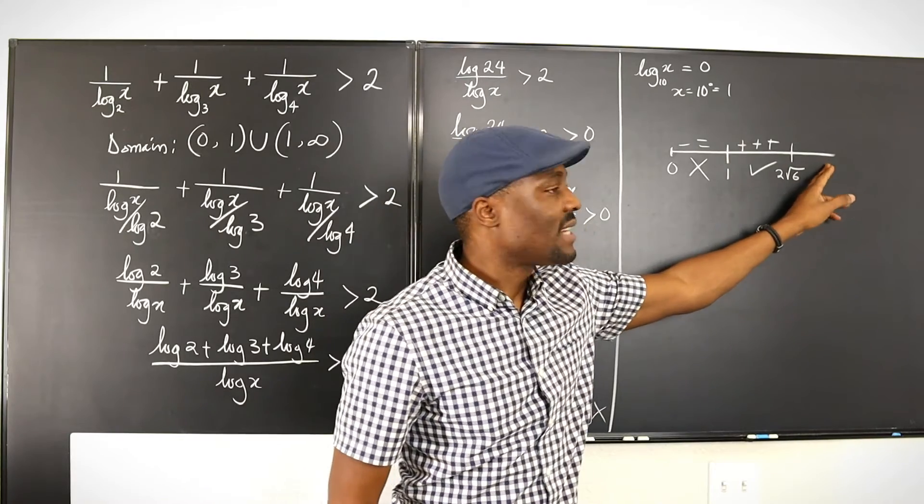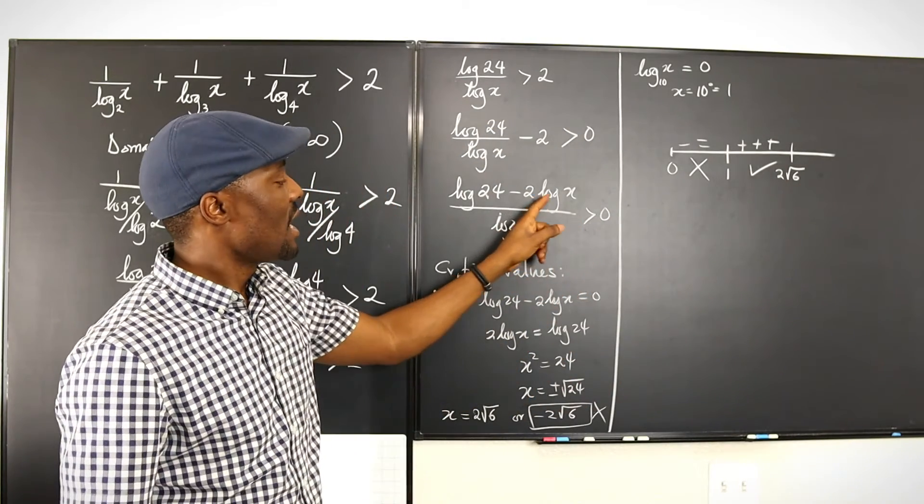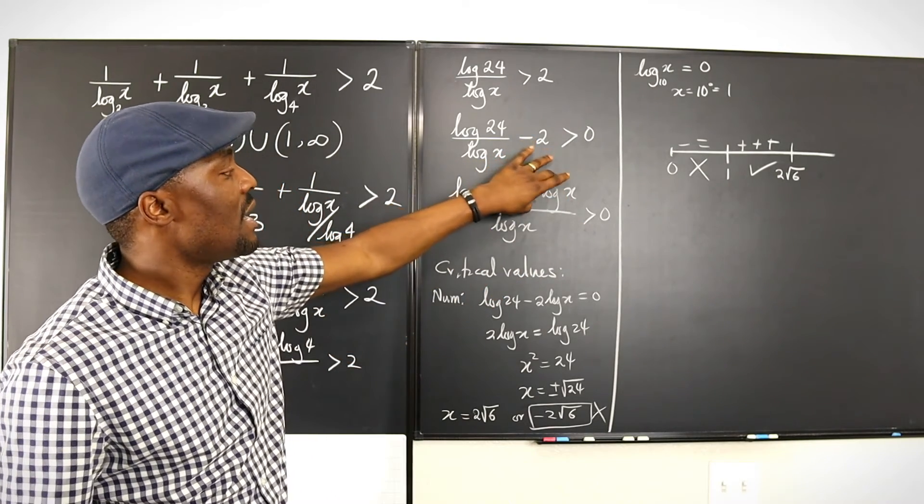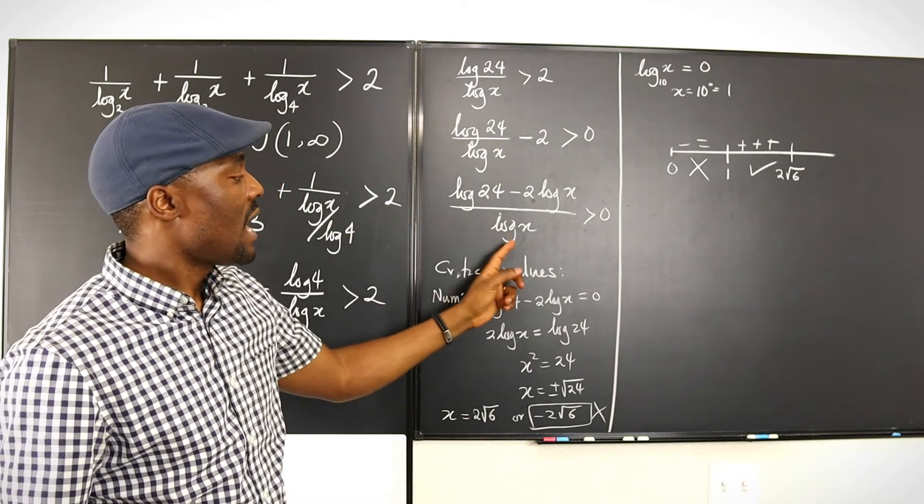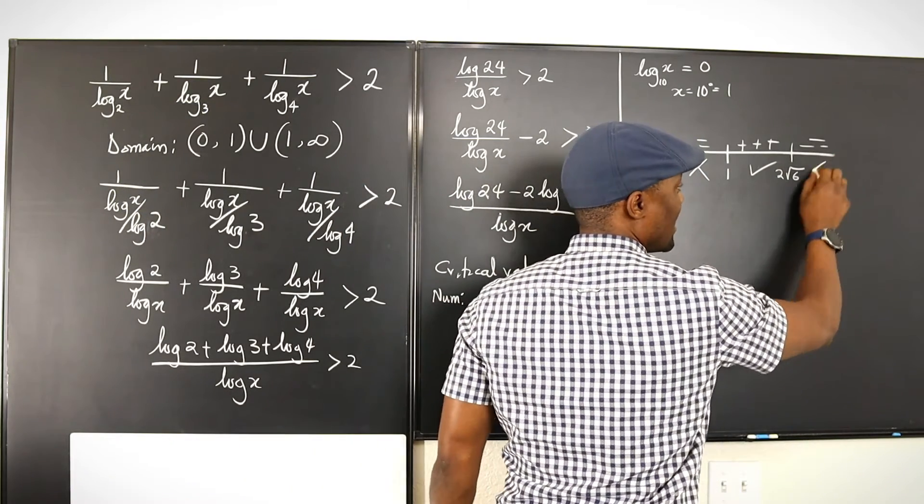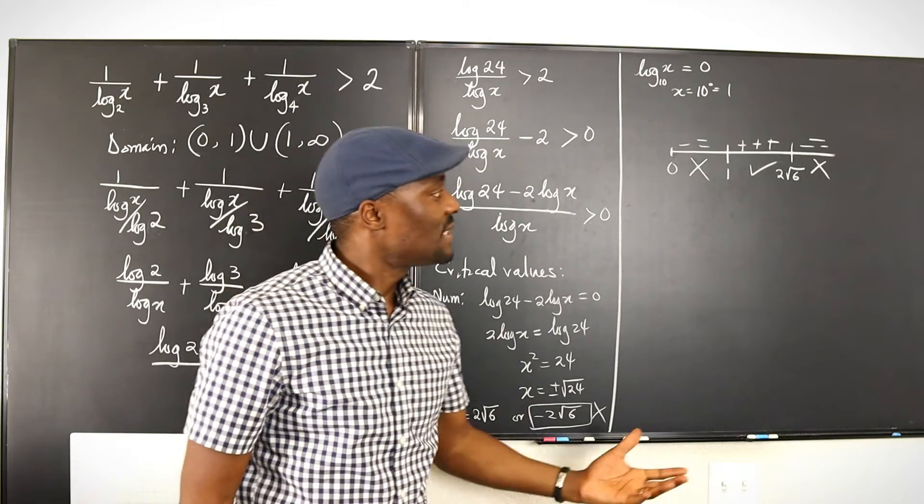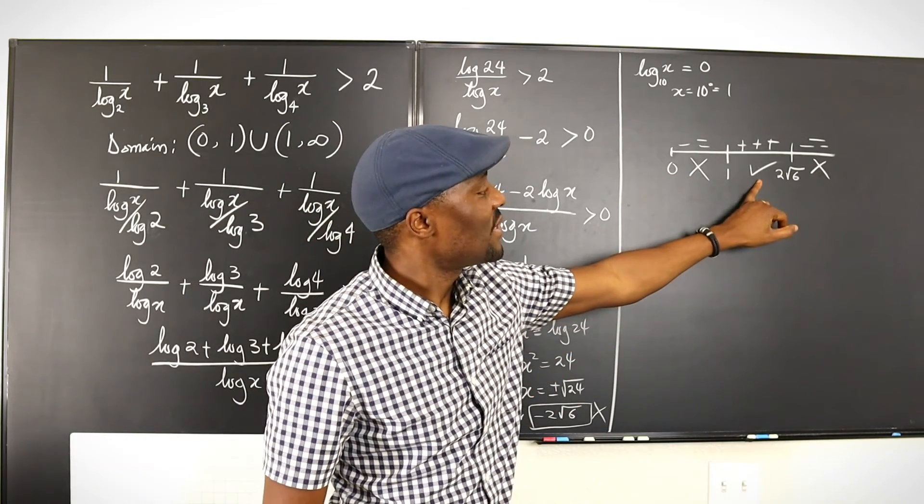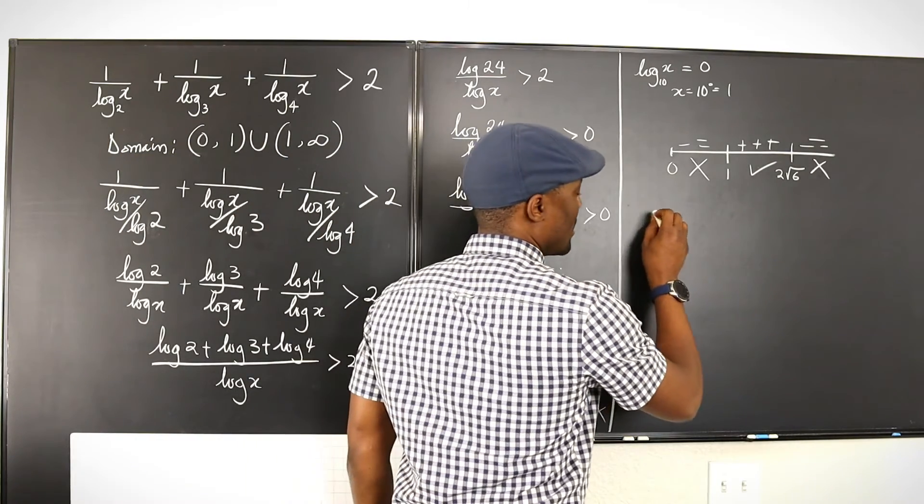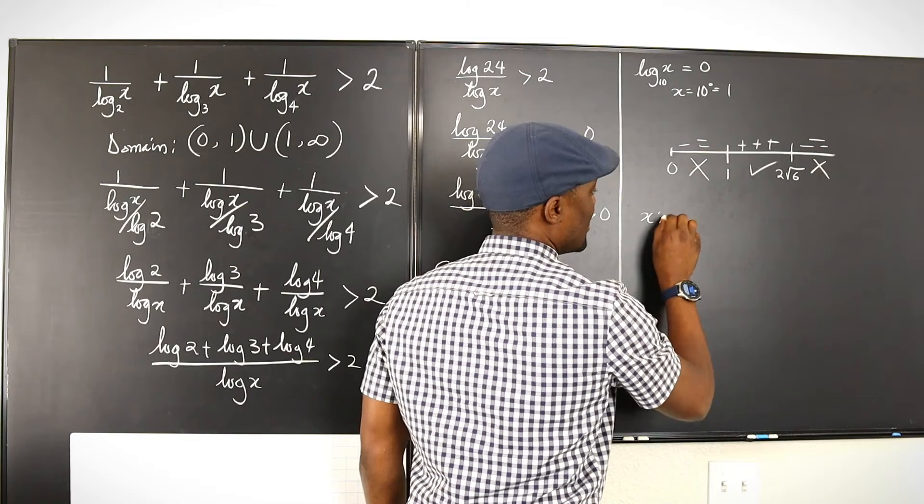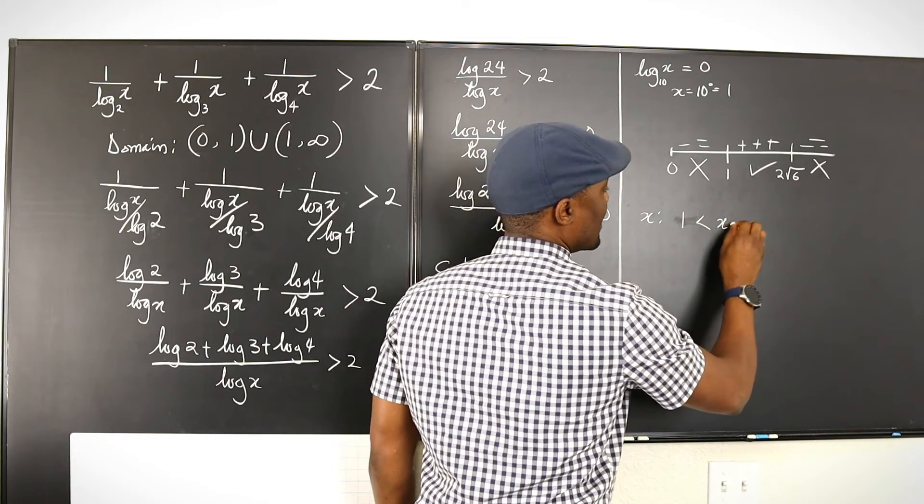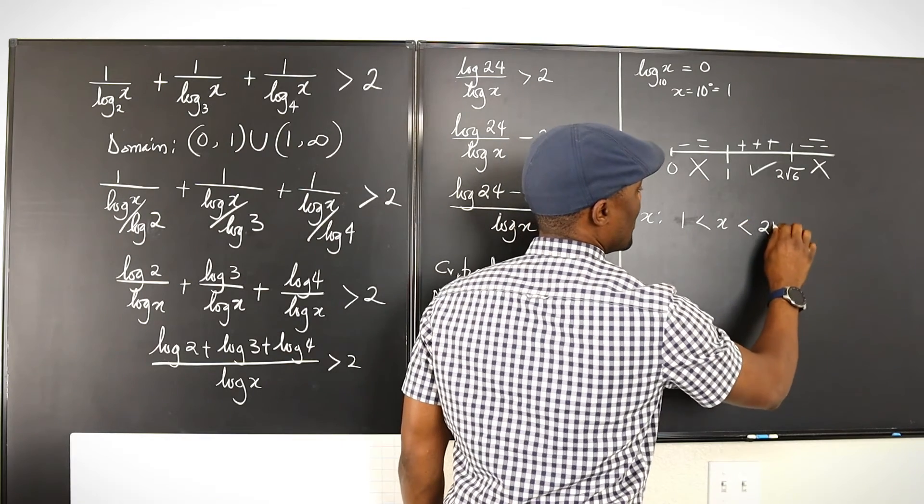Let's look at a region beyond 2 rad 6. Any number beyond 2 rad 6 is going to give us the logarithm of 2 rad 6 multiplied by 2 will end up being bigger than log 24. And if you divide it by that same positive value, you're going to be getting a negative here. So at the end of the day, what we have is that this region is the only region that satisfies this inequality. So our effective region x is such that 1 is less than x and x is less than 2 rad 6.